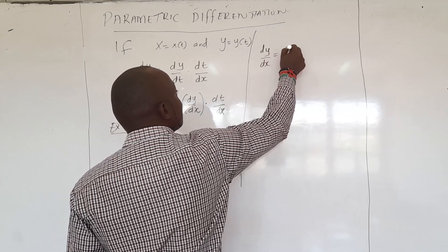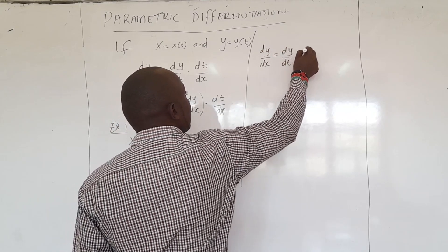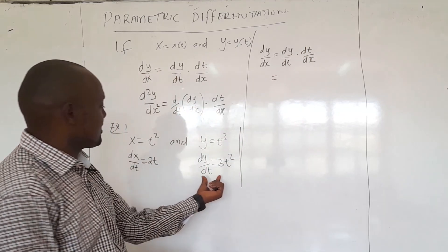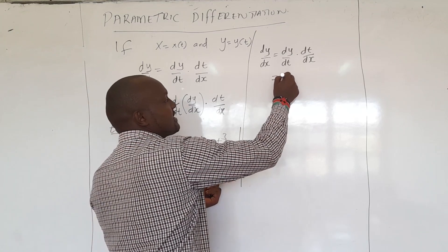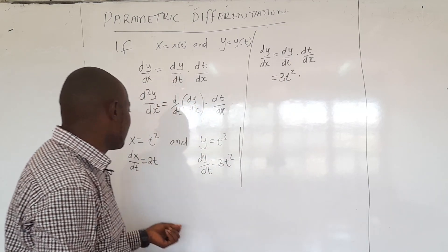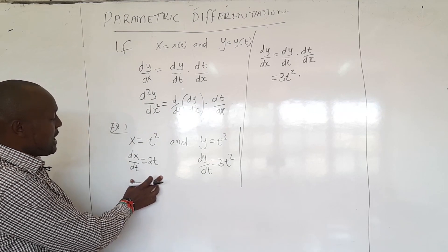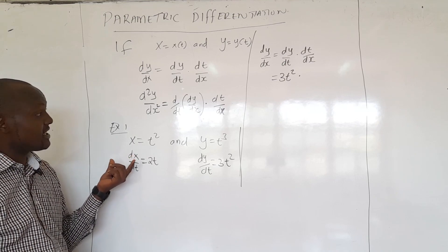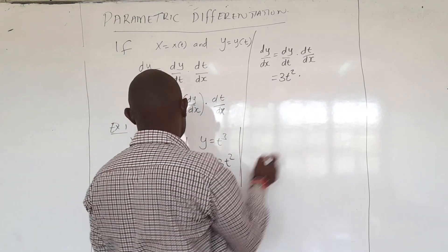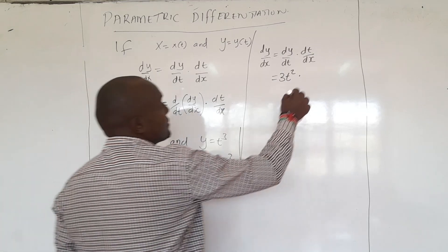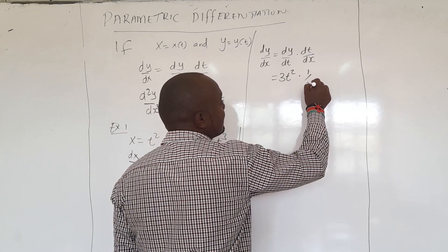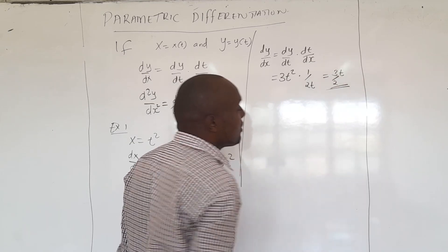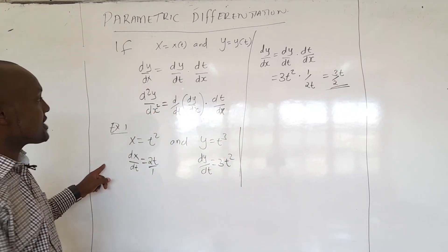Now to get dy/dx, we use dy/dt times dt/dx. Our dy/dt is 3t squared. For dt/dx, we take the reciprocal of dx/dt, which was 2t, so dt/dx equals 1 over 2t. Therefore dy/dx equals 3t squared times 1 over 2t, which simplifies to 3t over 2. That's the first derivative.